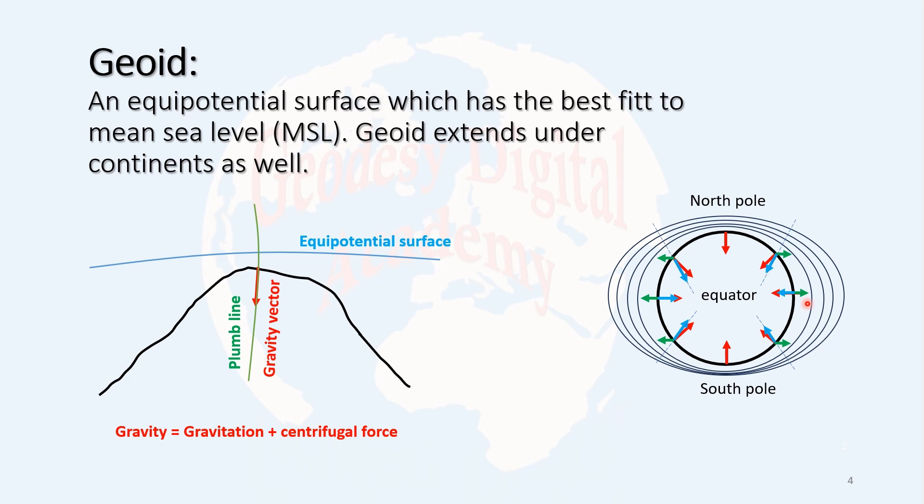Equipotential surfaces do not collide with each other. If they collide, it means one point can have two potentials, which is not true. There is no gap because the gravity field is continuous. The equipotential surfaces are smooth. Water is actually moving from the equipotential surface which is higher to the lower equipotential surface due to tangential forces.